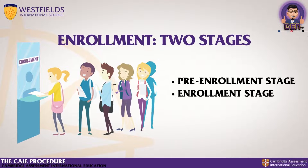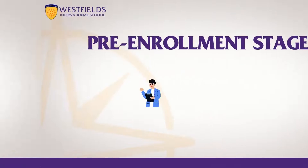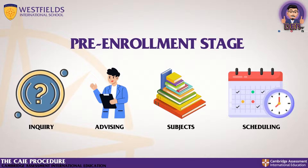Our enrollment procedure consists of two stages: the pre-enrollment stage and the enrollment stage. For the pre-enrollment stage, the aspiring candidate inquires about the enrollment procedure and is referred to the Guidance Center for Academic Advising. Then, the Head of the Guidance Center recommends the syllabi or subjects based on the university requirements and the center's offerings.